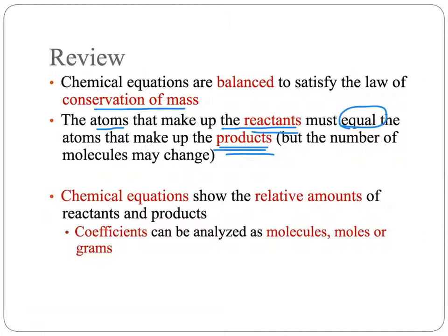Note that we are talking about atoms — the number of atoms — because the number of molecules may change as you rearrange compounds and go through synthesis, formation, decomposition, and all those different types of chemical reactions. Remember also that chemical equations, once they are balanced, show you the relative amounts of the reactants and the products through the coefficients.